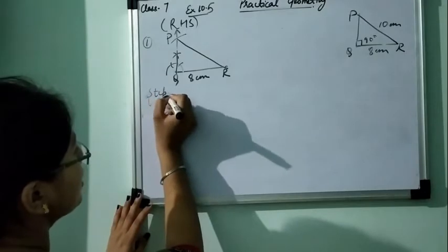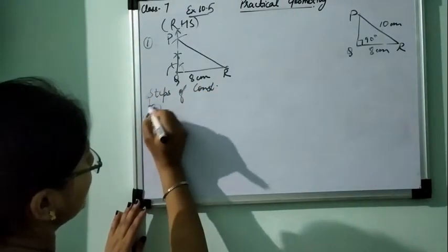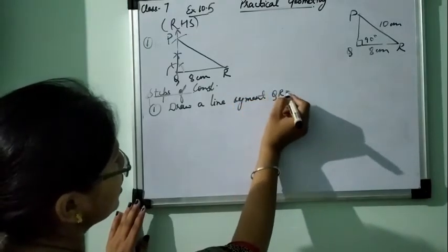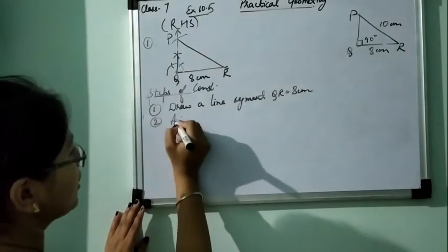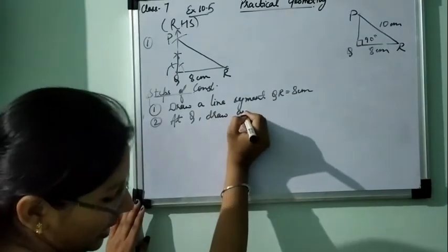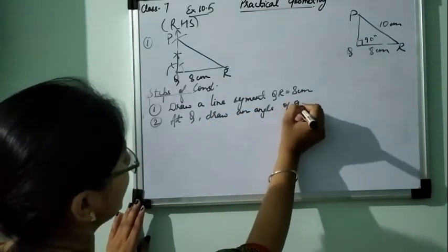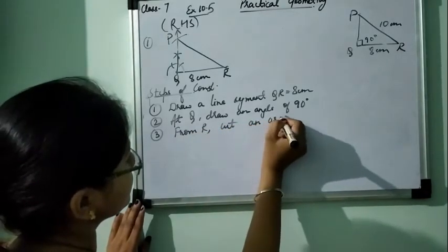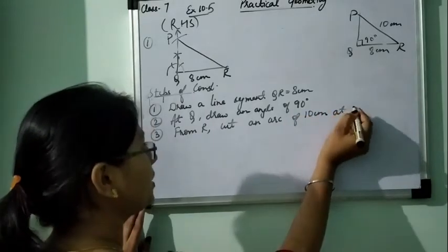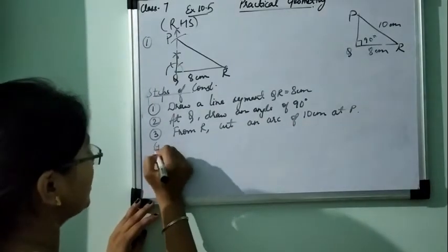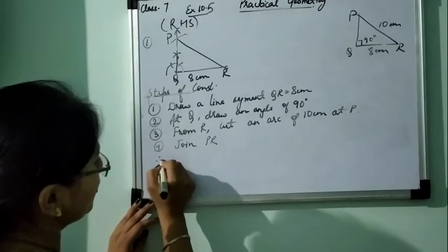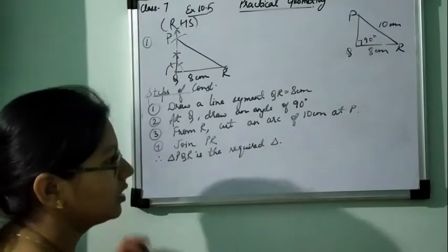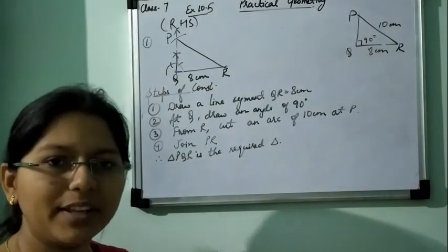So the same way we will write steps of construction. Draw a line segment QR is equal to 8 cm. Then at Q draw an angle of 90 degree. Third point, from R cut an arc of 10 cm at P. Then join PR. Therefore, triangle PQR is the required triangle.